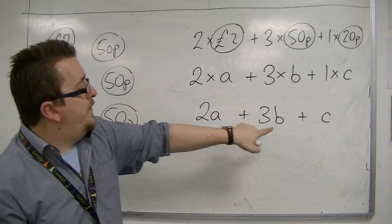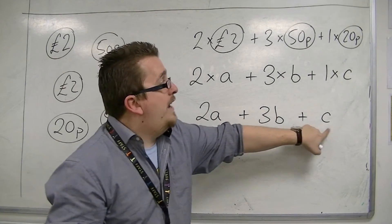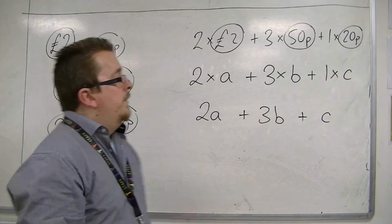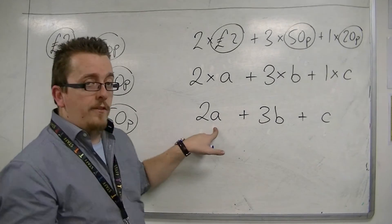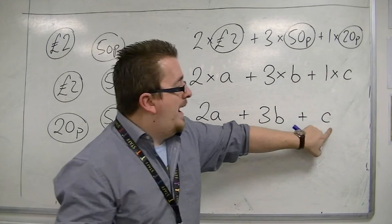So, two £2 coins, three 50p's, and one 20p. So, this could also represent two elephants, three rhinos, and one giraffe.